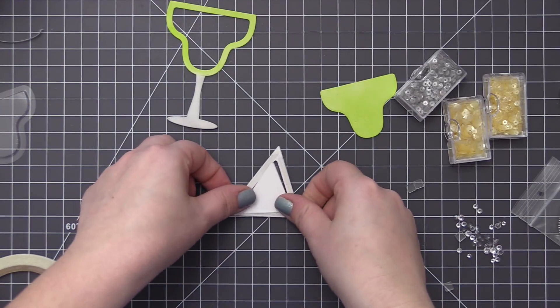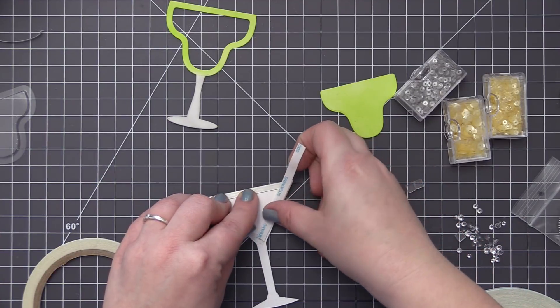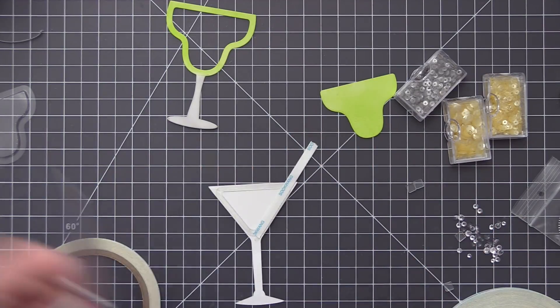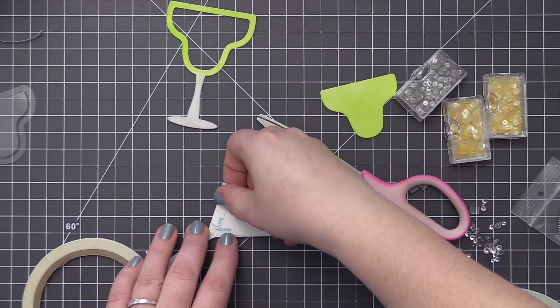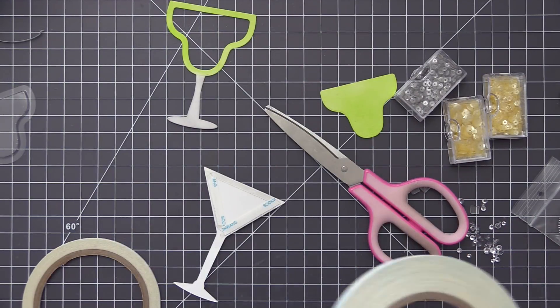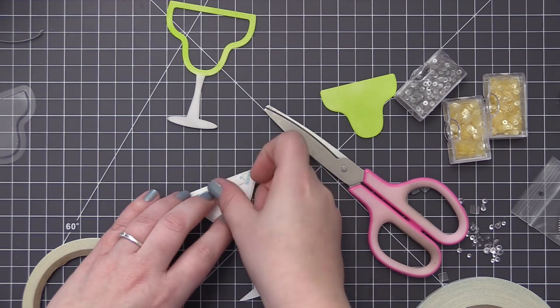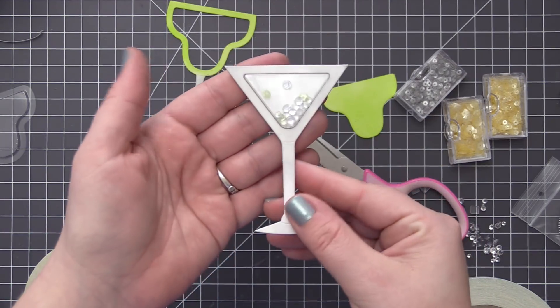Once I have everything in there I'm going to put the backer piece on and I'm just using some score tape to secure that in place so that it stays against the back of the glass. And I'm not going to end up removing the backing on this score tape. I'm just using it as an adhesive to hold the backer onto the shaker but I will add more adhesive once I add it to the card.